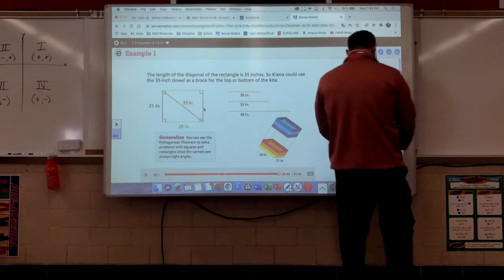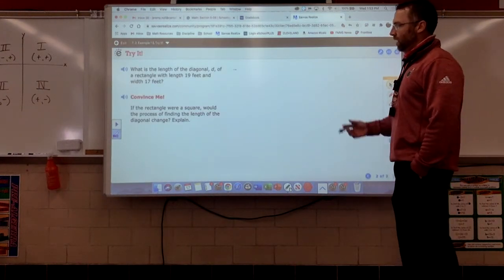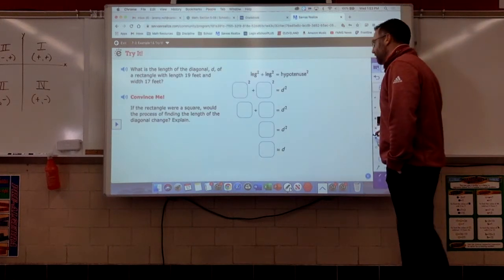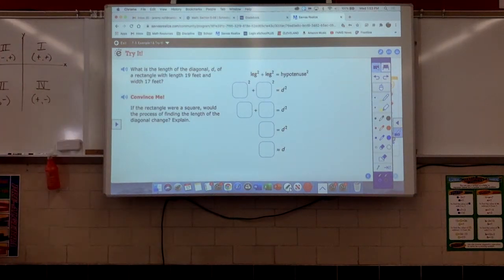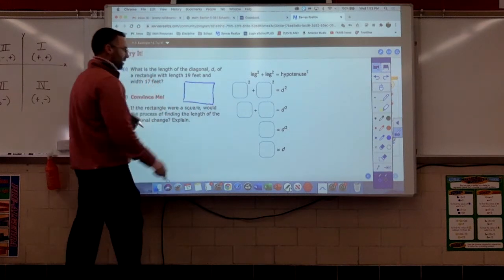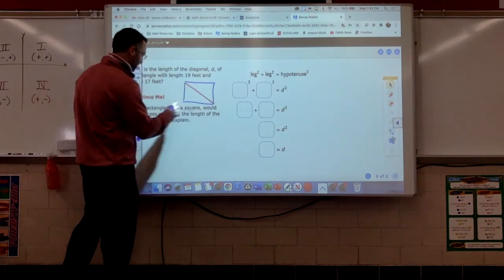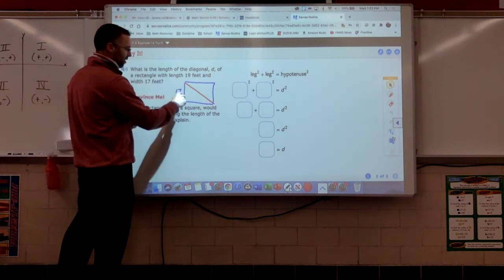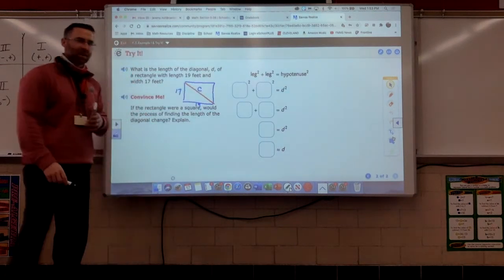Let's look at a try-it section. What is the length of the diagonal of this rectangle with a length of 19 feet and a width of 17? So, once again, grab your handy-dandy little calculator. We've got a rectangle, and it wants to know the length of the diagonal. Diagonal. There you go. Leg. We can call this 17, we can call this 19. We want to know what is the length of that diagonal.